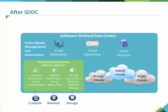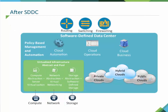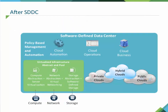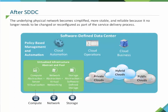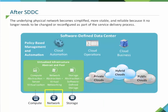Common examples of these services are routing, switching, and firewalling. This also means that the underlying physical network now becomes simplified, more stable, and reliable because it no longer needs to be changed or reconfigured as part of the service delivery process.